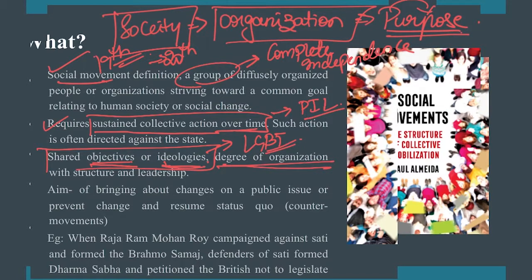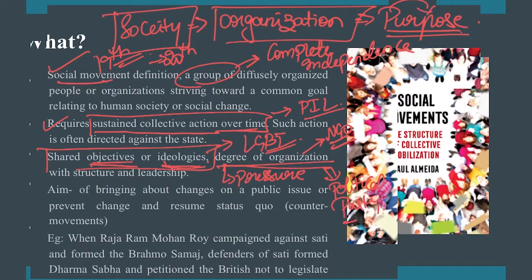It also depends on the degree of organization. This can range from an informal simple network where people come together for awareness, to an NGO working in the interest of the cause, to a pressure group pressurizing the government to legislate in its favor. The highest form of organization in a democracy is a political party — all of these come under degree of organization.